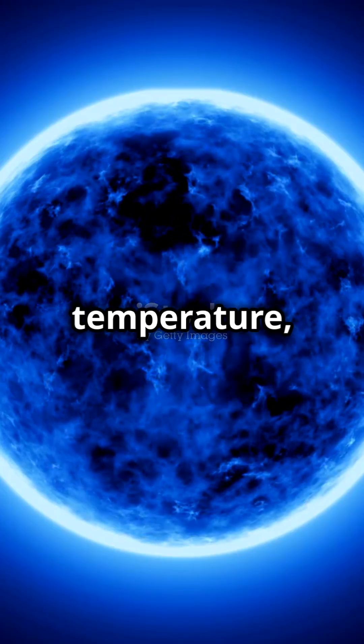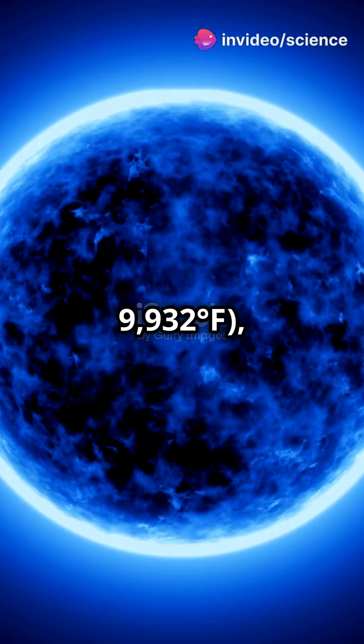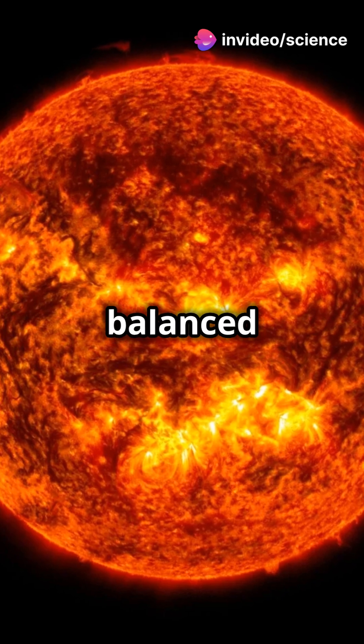The sun's surface temperature, around 5,500 degrees Celsius or 9,932 degrees Fahrenheit, is what gives it this balanced spectrum.